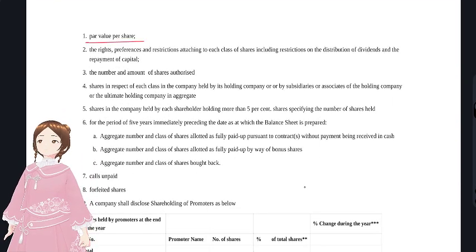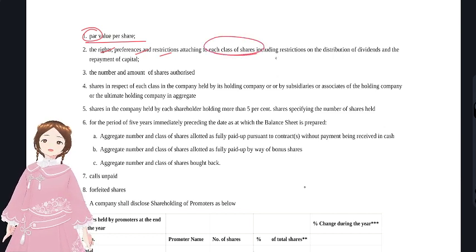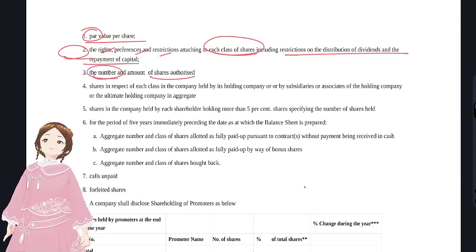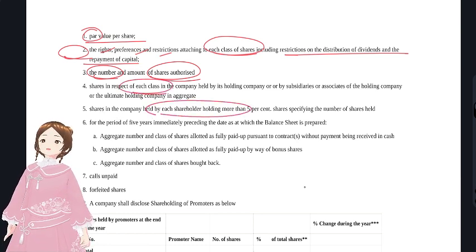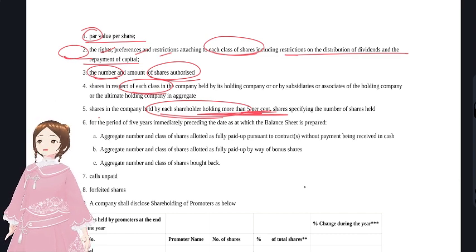For presentation and disclosure of equity, Schedule 3 requires disclosures including: par value per share, rights, preferences, and restrictions attaching to each class of shares including restrictions on dividend distribution and repayment of capital. These disclosures are in addition to Schedule 3 requirements.